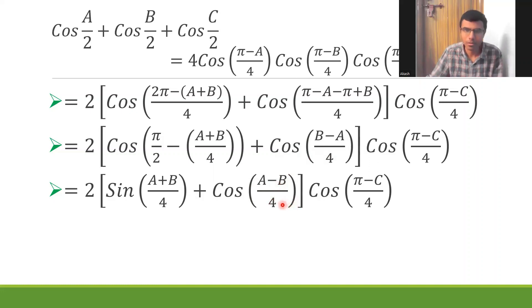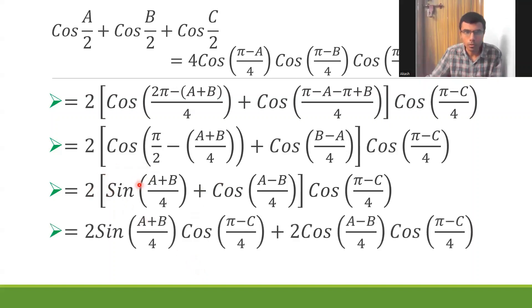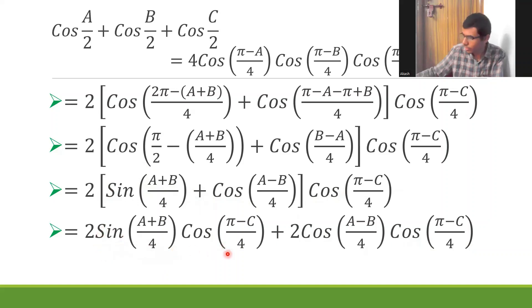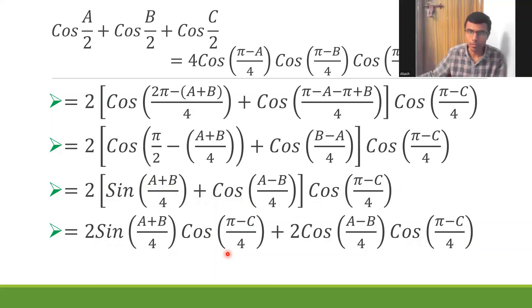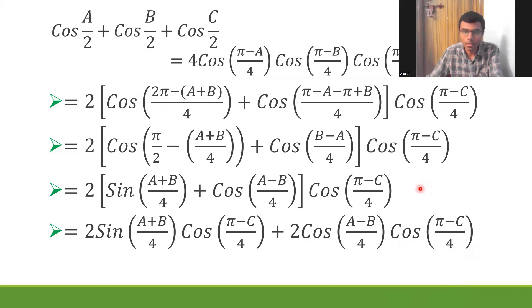Next I multiply cos(π−C)/4 through to each term, along with the factor of 2 outside. This gives two products: 2 sin((A+B)/4) · cos((π−C)/4) and 2 cos((A−B)/4) · cos((π−C)/4). The first is of the form 2 sinA cosB = sin(A+B) + sin(A−B), and the second is of the form 2 cosA cosB = cos(A+B) + cos(A−B).